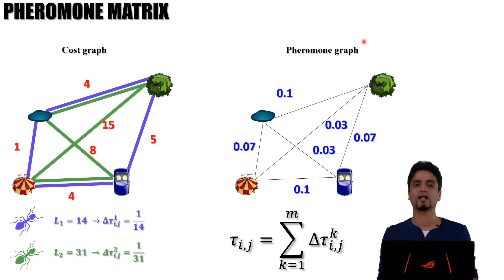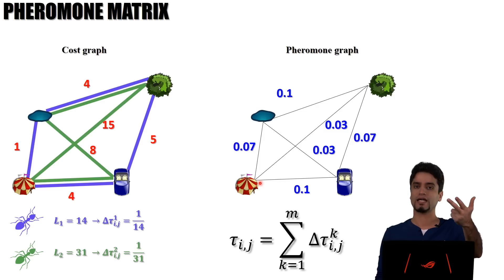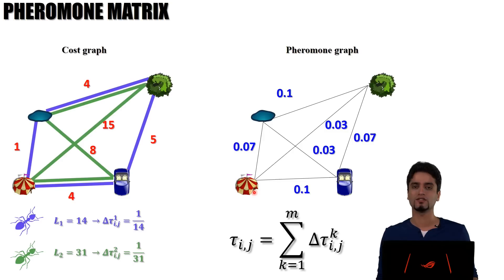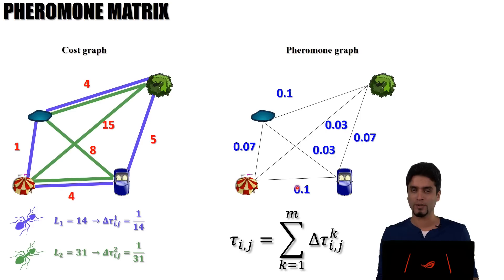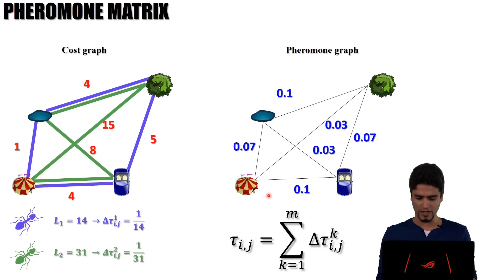Now consider a new red ant starting from the same node. Which path is more likely to be taken — the one with pheromone 0.07, 0.03, or 0.10? Of course the one with 0.10 has the highest pheromone deposited, so the red ant is more likely to choose that path.